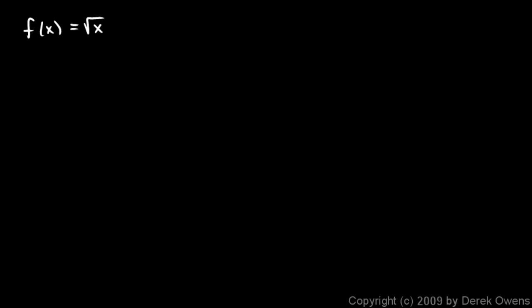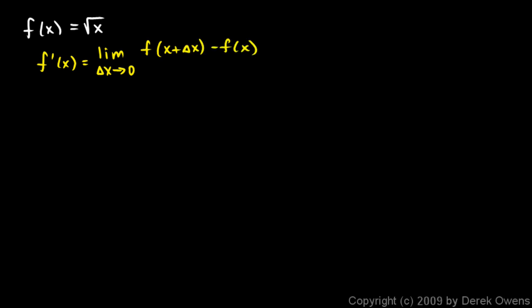f of x is the square root of x. So the derivative, f prime of x, is going to be the limit as delta x approaches zero of f of x plus delta x minus f of x over delta x. So let's apply this concept to this function — we'll differentiate this function.